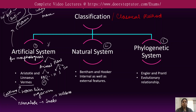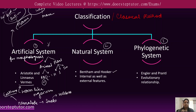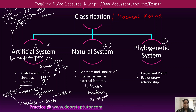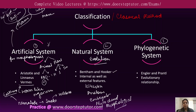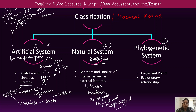The natural system was then given by Bentham and Hooker, and it was based on natural affinities. This means it included many internal and external features such as ultrastructure, anatomy, embryology, phytochemistry, and morphology — organisms were classified based on all these features. However, it still did not consider evolution, so it did not follow evolutionary relationships, which is why some plants were placed in the wrong order.